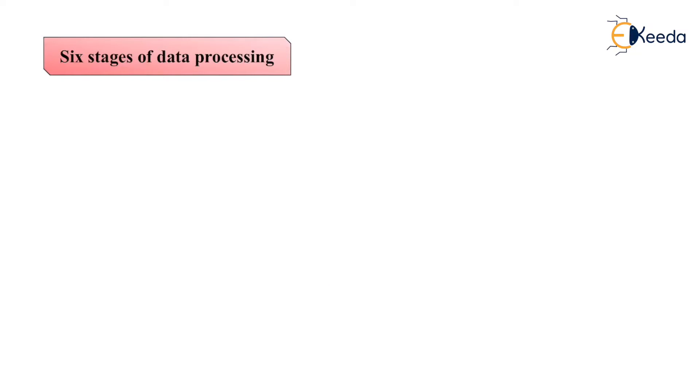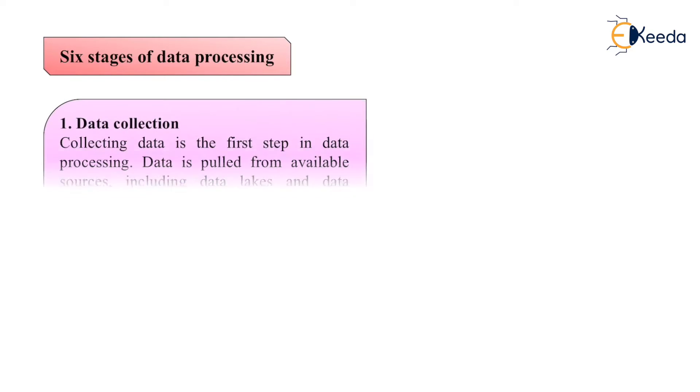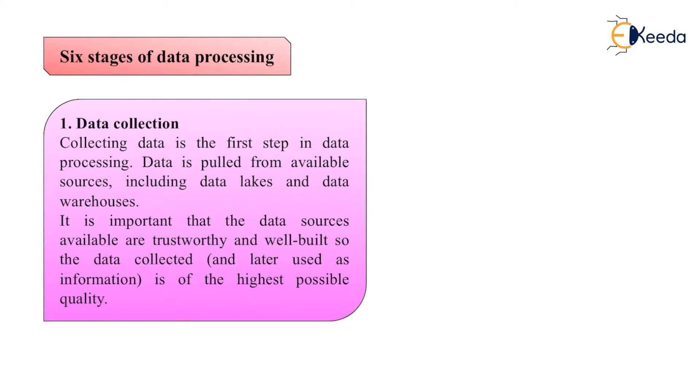There are six stages present to perform data processing. First is data collection. Data collection is the first step in data processing. Data is pulled from available sources including data lakes and data warehouses. It is important that the data sources available are trustworthy and well-built so that data collected is of the highest possible quality.